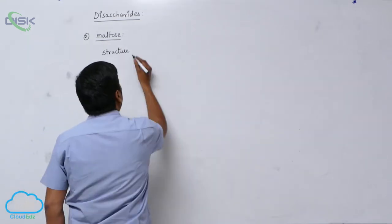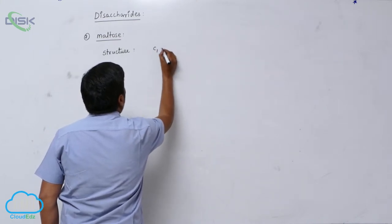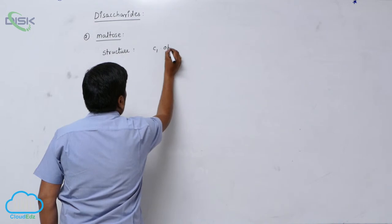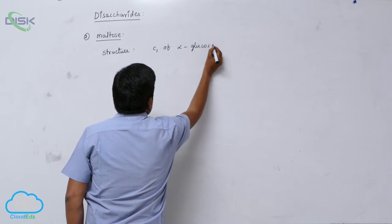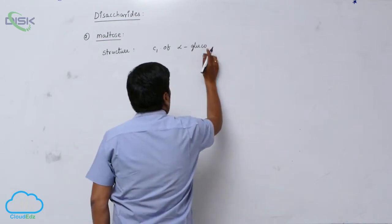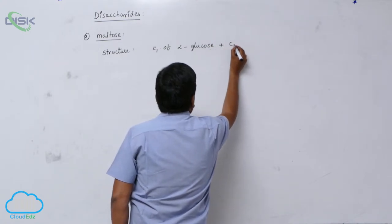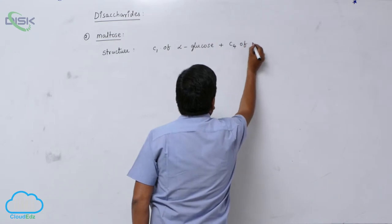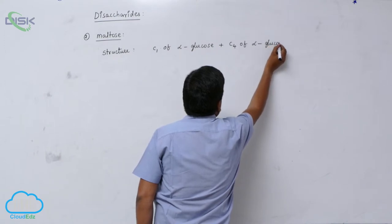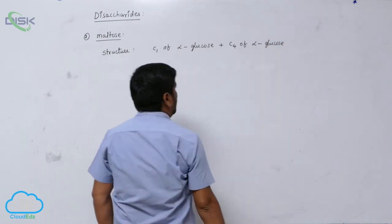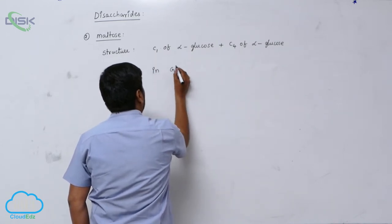Structure: C1 carbon of alpha D-glucose plus C4 carbon of alpha D-glucose involved in glycosidic linkage.